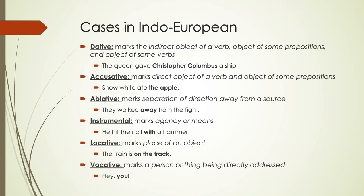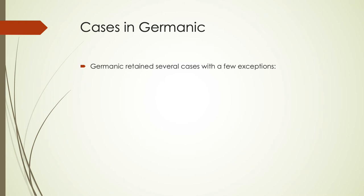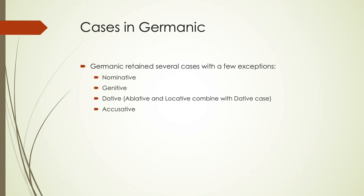Each of these cases would have had their own morpheme attached directly to the noun or adjective to convey that relationship. By the time we get to Germanic, many cases are retained, but with some exceptions. Germanic still has nominative, genitive, dative, and accusative. But ablative and locative have combined with the dative case, now covering those object-of-preposition functions. Instrumental and vocative cases were still present, making it a relatively robust case system, but beginning to simplify compared to Indo-European.